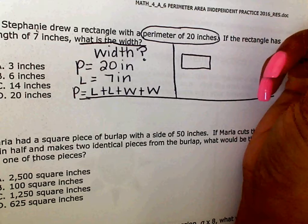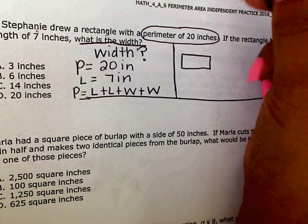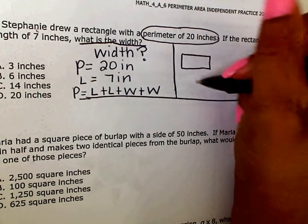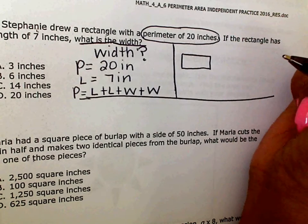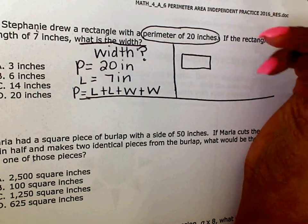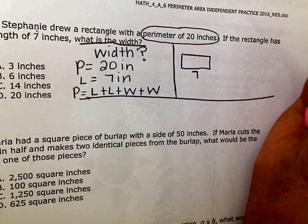With this rectangle, what information do I know about it? All the way around, it's 20 inches. What else do I know? Okay, so if this is 7, where else is it 7?